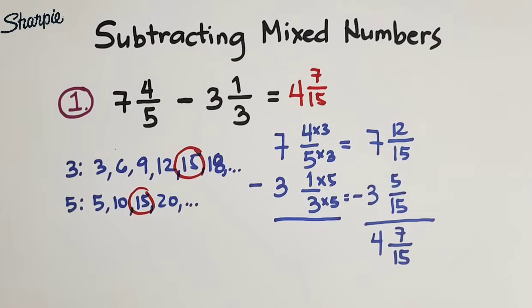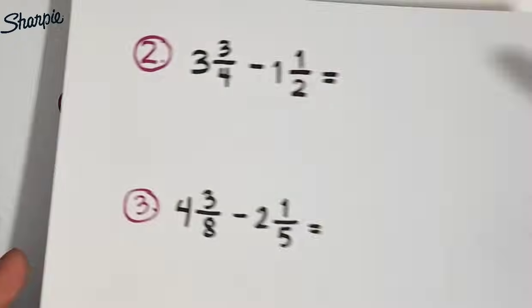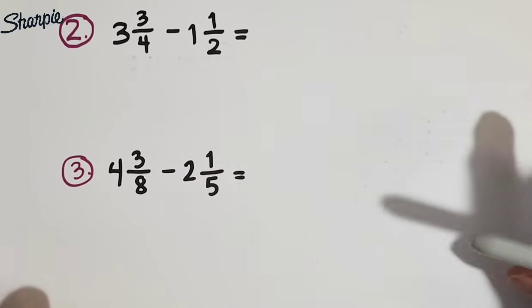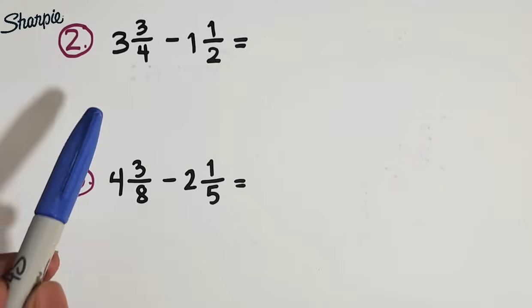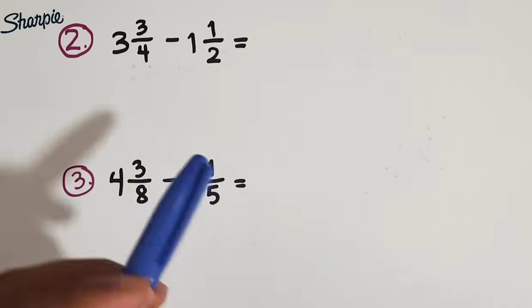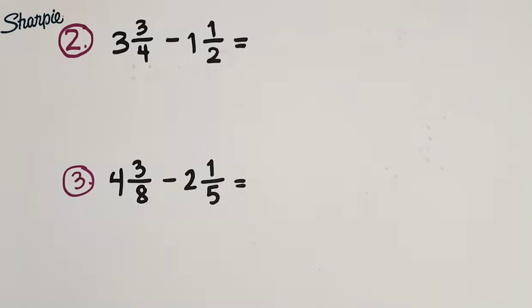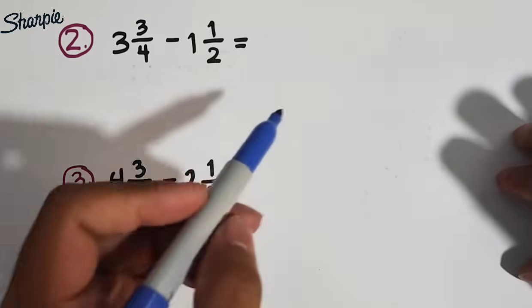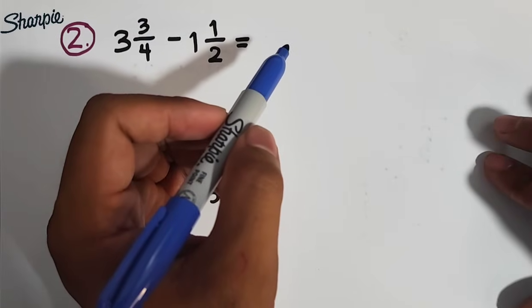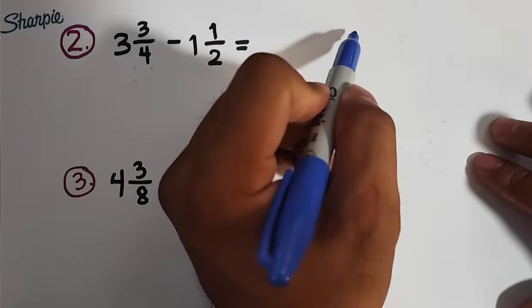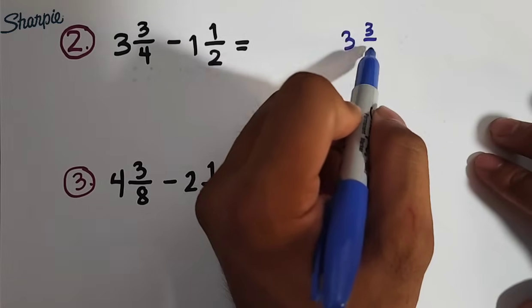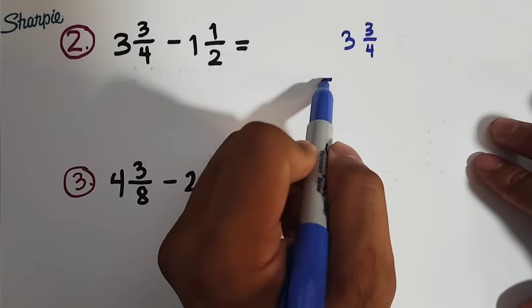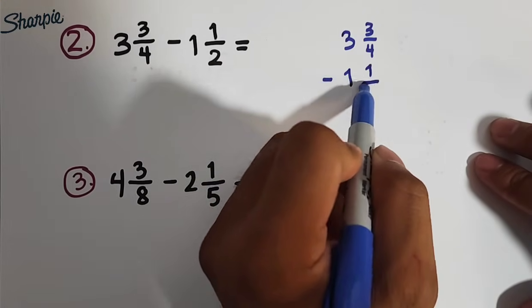Now, let's move on with our next example. So, as you can see, we have here these examples. Number 2, we have 3 and 3 over 4, minus 1 and 1 half. Now, to simplify or to find the difference between these two mixed numbers, let us use the vertical method. So we will copy this. We have 3 and 3 over 4, minus 1 and 1 half.